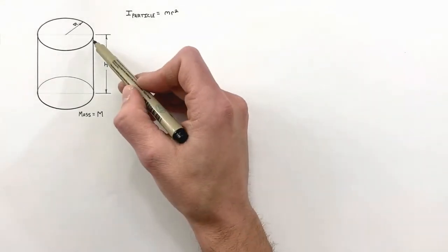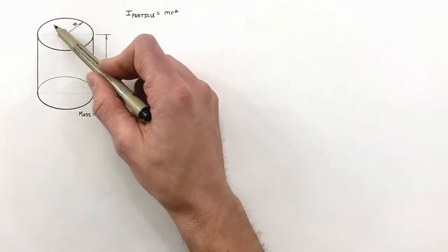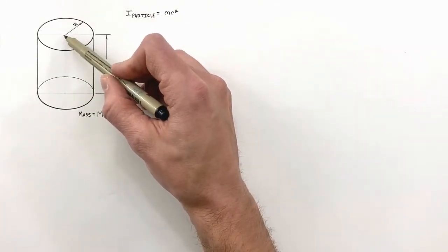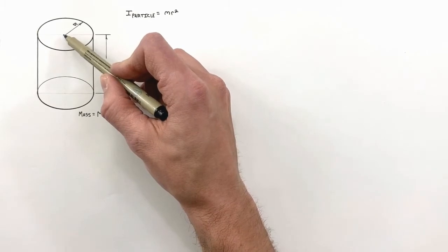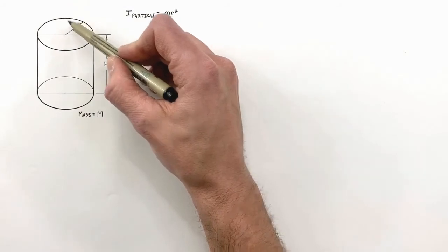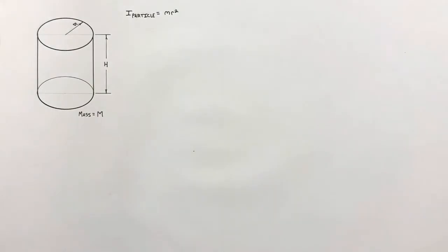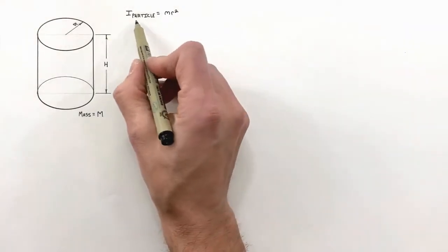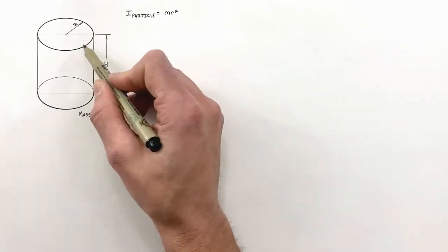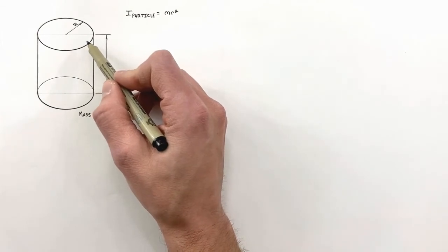The issue we run into when dealing with this cylinder rotating around the central axis is that this cylinder is a distribution of mass. Some of the mass is at a very small radius near the center of the cylinder, and some of the mass is at a greater radius out here as it rotates around our central axis. So we have a distribution of mass - not all the mass is at the same position. That means this equation for the inertia of a particle is not going to apply blindly to this cylinder. We have to take into account the shape of the object.